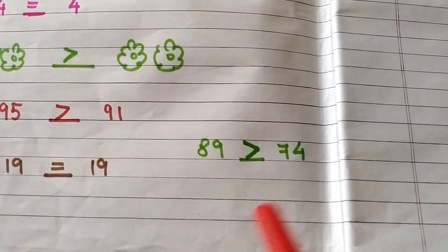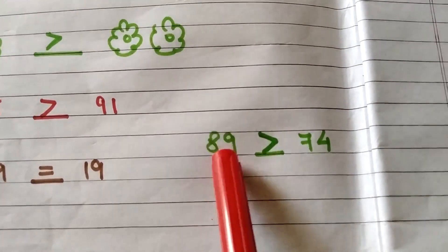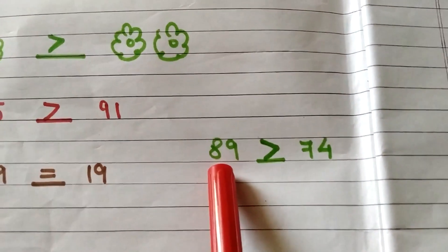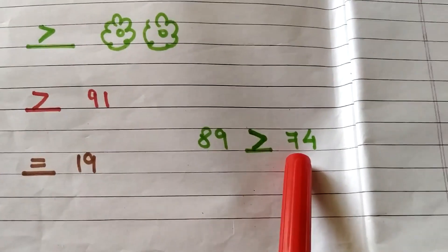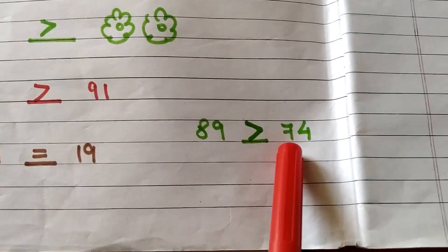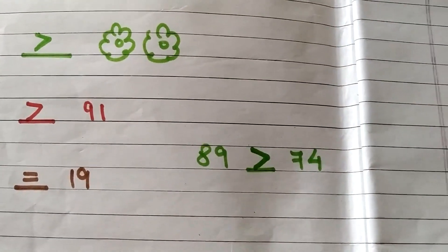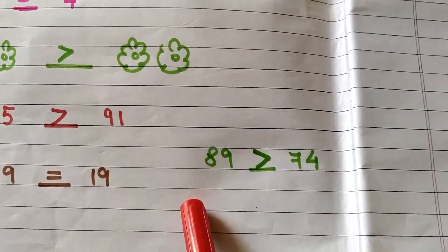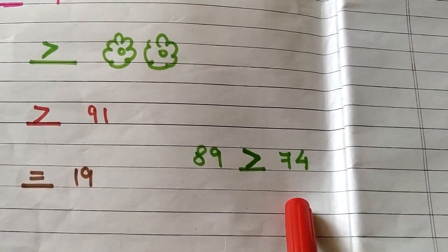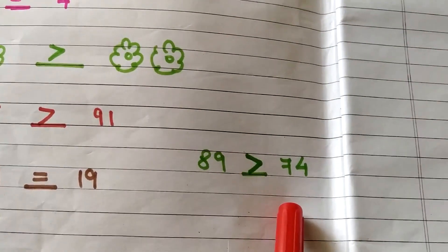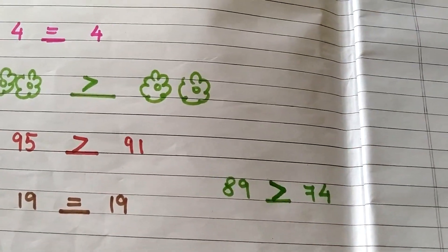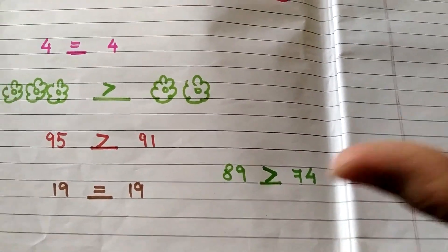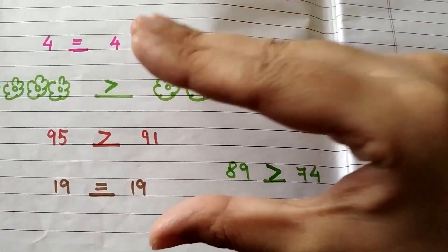One more example children: we have 89 over here and 74. The first digit is 8 over here and 7 over here. So which number is bigger, 8 or 7? In the number line 8 comes after 7, so 89 is a bigger number compared to 74. The crocodile's mouth will be open on the side having more number of fishes. So which is the greater number? It is 89, so its mouth will be open on this side.